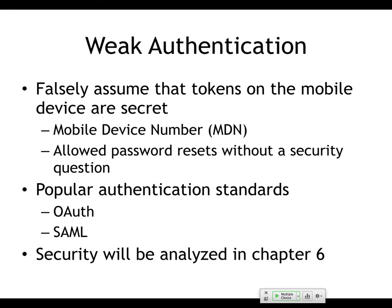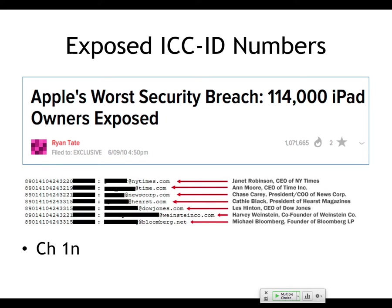Instead of using OAuth, people do something awful like store the password in plain text on the device. SAML — security association markup language — had some serious flaws in early versions but has gotten better. The Apple worst security breach exposed 114,000 iPad owners with all their email addresses and IMEI numbers, and this meant for a period of time other people could get into many iPhone apps with just that number, which was being accepted as authentication.